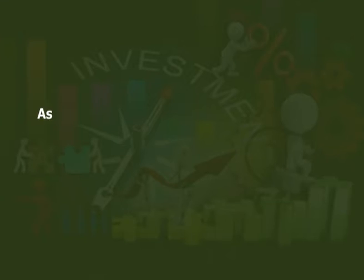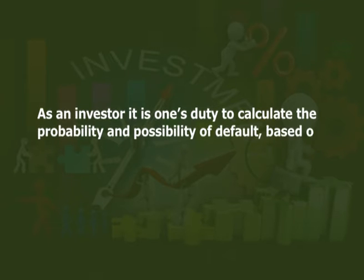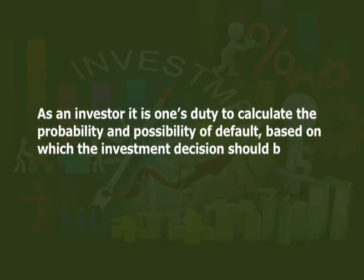Default risk: a bond is a certificate of debt that ensures the investor will receive the principal amount plus interest on a specific date of maturity. This means it is borrowed money that must be repaid by the company over time with interest. However, many investors fail to realize that corporate bonds do not have such a guarantee — instead they trade on the company's goodwill. Hence, the returns are dependent on the corporation's ability to repay that debt. As an investor, it is one's duty to calculate the probability and possibility of default, based on which the investment decisions should be taken.